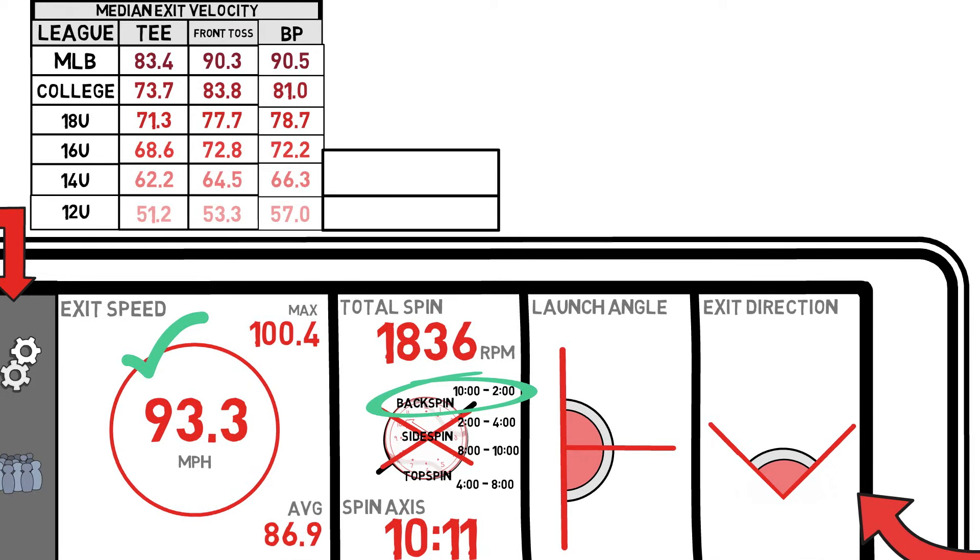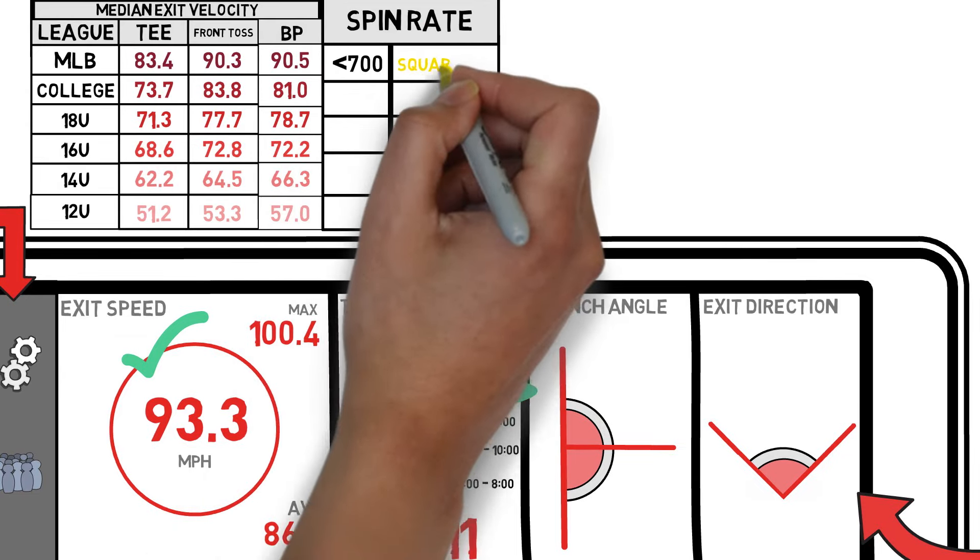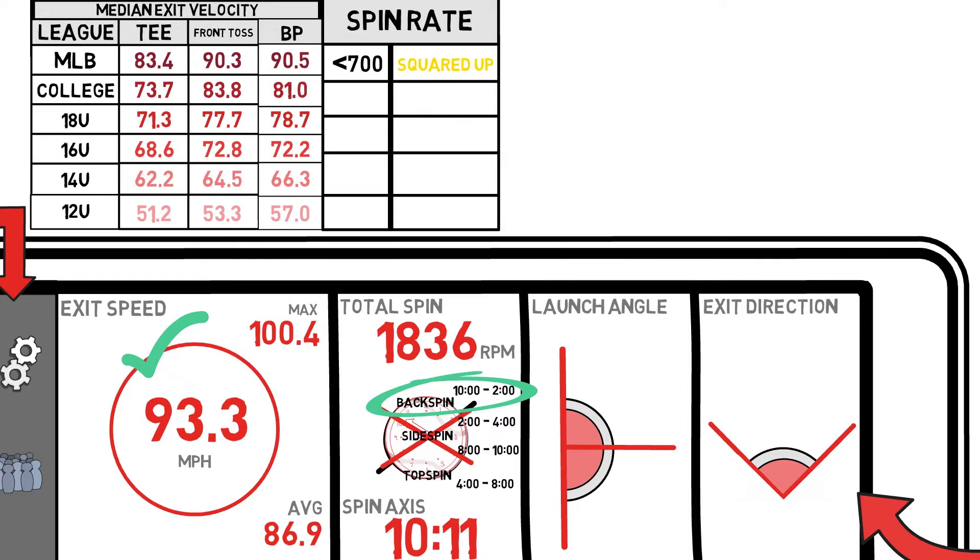To dive into the other half of this section, total spin rate, we will look at another graphic provided by Rapsodo to help explain what is good and what is not so good. Starting with a low spin rate, below 700 RPMs. This is a ball that was directly squared up, meaning it comes off the bat like a knuckleball, normally pretty well struck, but they don't travel too far without the help of a little bit more spin.